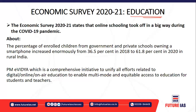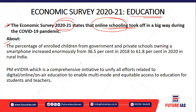Related to education, the Economic Survey also covers certain aspects. As the country emerges from the COVID-19 pandemic, online education and online schooling took off in a big way. The Economic Survey observed that in 2020-21 online schooling grew significantly. The percentage of enrolled children from government and private schools accessing education via smartphones increased from 36.5% in 2018 to 61.8% in 2020 in rural areas.